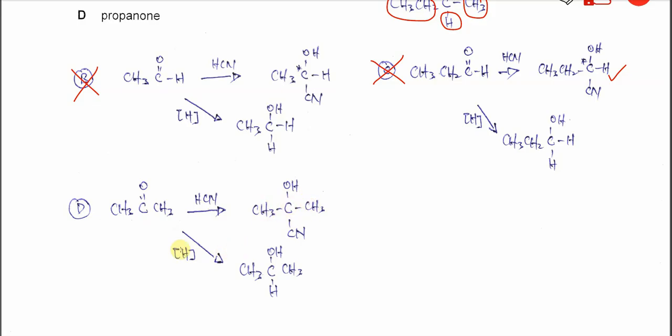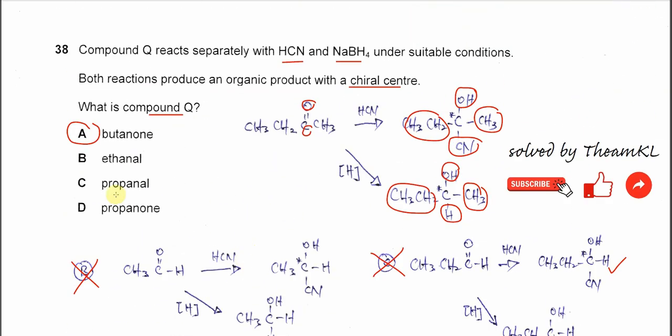After it's reduced, it will not form any chiral center either. It will form propan-2-ol. Therefore, the answer is confirmed to be A.